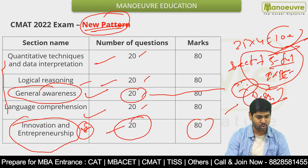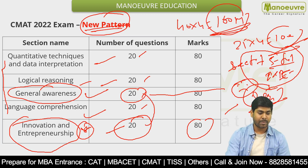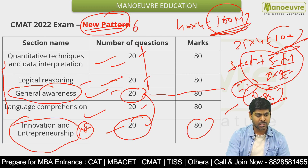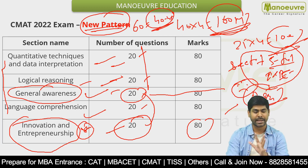Both GK and Innovation and Entrepreneurship have 40 questions total — 40 into 4 is 160 marks. In the rest of the areas — Logic, Maths and English — in those 60 questions, we will try to do 40 plus. So the score would be around 170–180 from those sections.